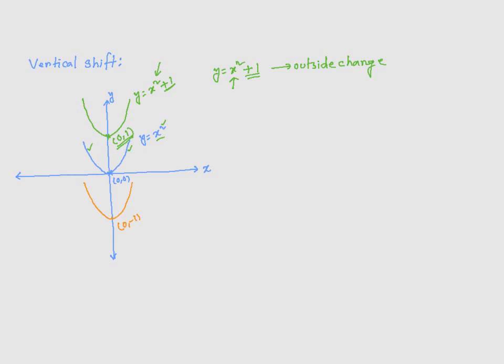So, our original function is y is equal to x squared, which is this. Now, if I subtract 1 from y is equal to x squared, the effect is basically taking this function, taking this graph, and moving it down by 1 unit. Now, the new vertex is at 0, negative 1.